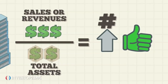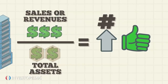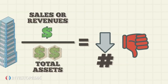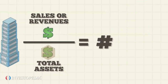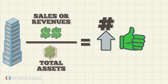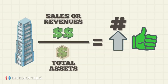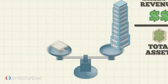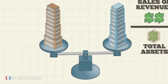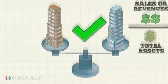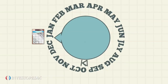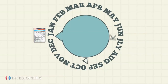A lower number may convince a company to try other methods to help maximize the efficiency of its assets. Nevertheless, this ratio varies between industries and can only be compared effectively between businesses in the same sector. Asset turnover is usually calculated annually, either for the fiscal or calendar year.